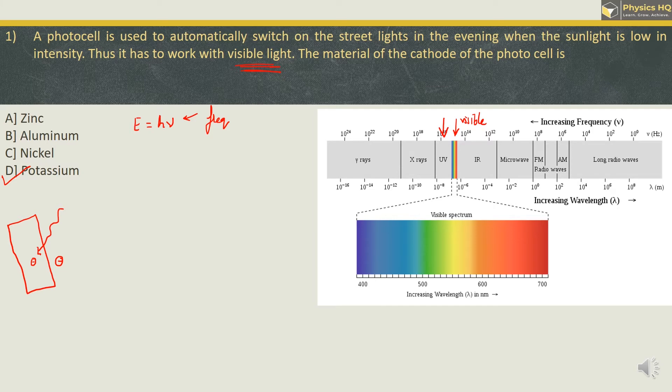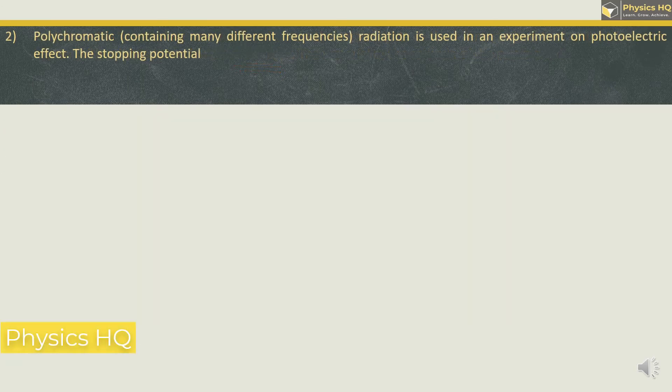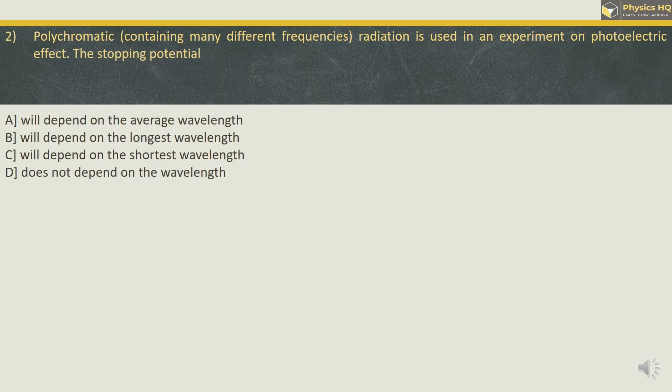Let us check out the next MCQ. Polychromatic radiation is used in an experiment on photoelectric effect. The stopping potential will depend on the average wavelength, longest, shortest, or will not depend on the wavelength.